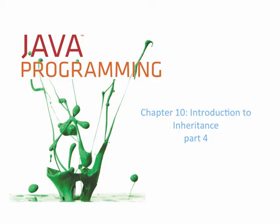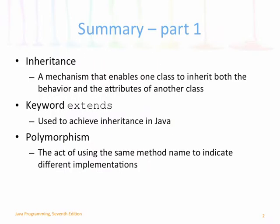Chapter 10: Introduction to Inheritance, Part 4, is really just our summary. Inheritance is a mechanism that enables one class to inherit both the behavior and the attributes of another class, setting up that relationship of is-a, where a subclass is a superclass.